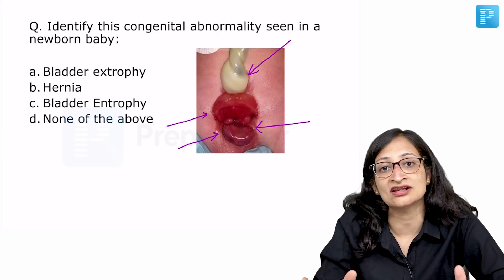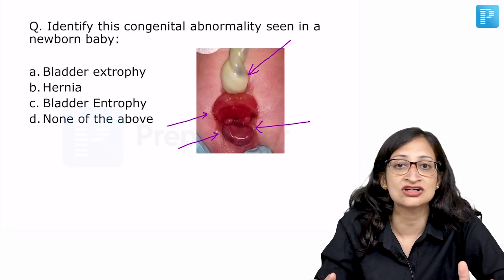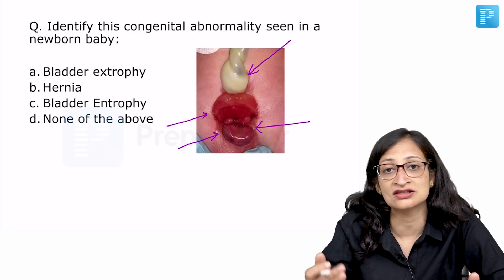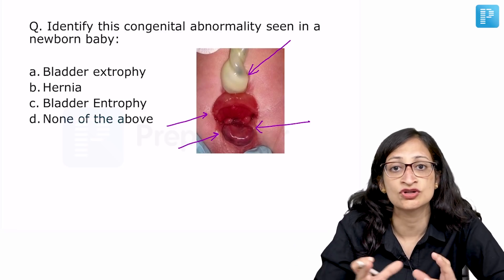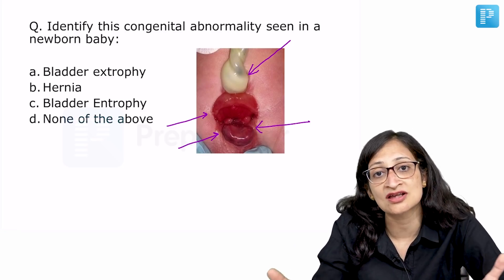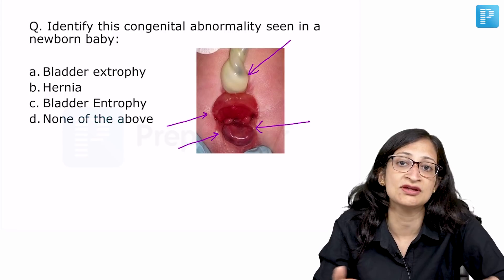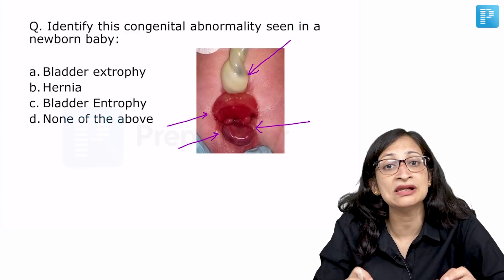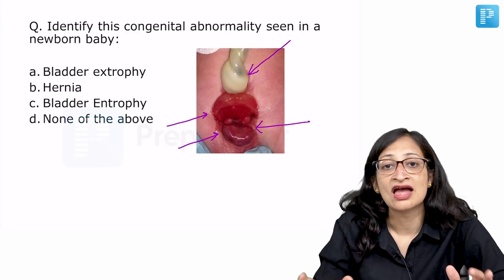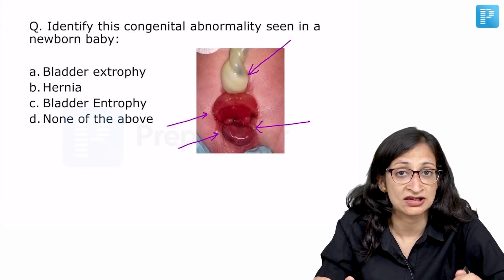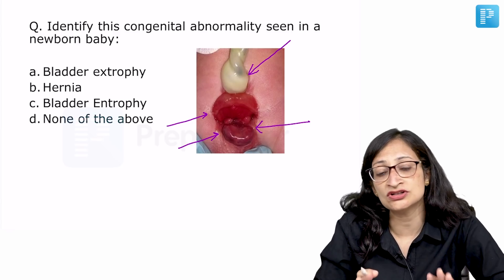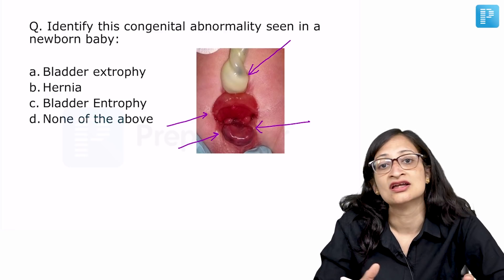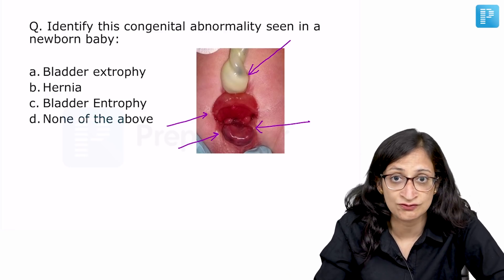This is what you get in bladder exstrophy, which we have discussed in congenital malformations of the kidney and urinary tract. The bladder mucosa is exposed to outside, the umbilical cord attachment has shifted down, and the pubic rami are widely separated. In males there is complete epispadias, anal malformations can also be associated, and these babies have complete incontinence of urine with an increased risk of bladder adenocarcinoma later on. Immediately wrap this area with a plastic cling wrap to keep it moist until surgery.